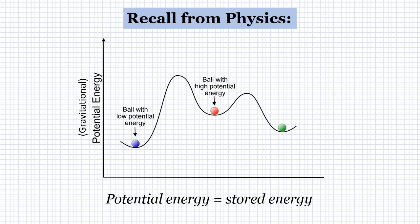Let's think back to physics and recall what gravitational potential energy was. I have a couple of different balls on hills here. This blue ball has low potential energy compared to this red ball, which is sitting higher, so it has more gravitational potential energy. If you have a ball on the top of a hill, it has stored potential energy. If I give that ball a little nudge, that potential energy is going to be transferred into kinetic energy and the ball will start rolling down the hill. The point of this analogy is that potential energy is stored energy.